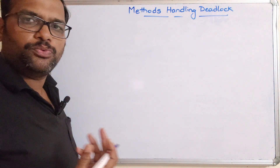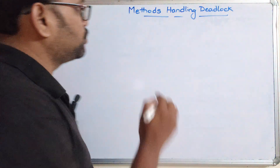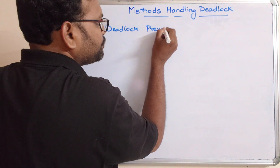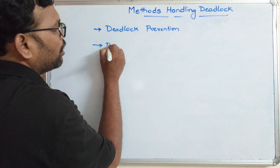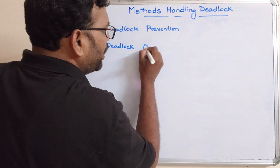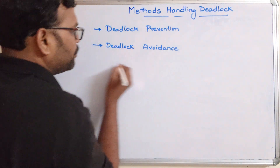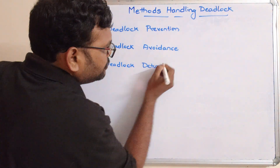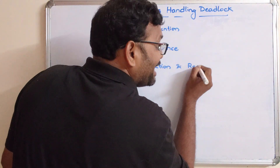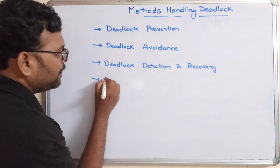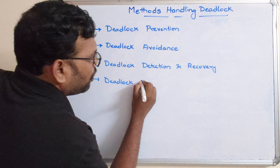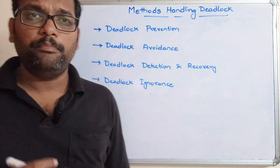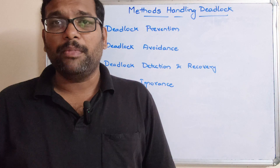Mainly, there are four methods to handle the deadlock situation. The first one is deadlock prevention, the second is deadlock avoidance, the third is deadlock detection and recovery, and finally deadlock ignorance. These are the four methods that can handle the deadlock situation, and we'll see them one by one.